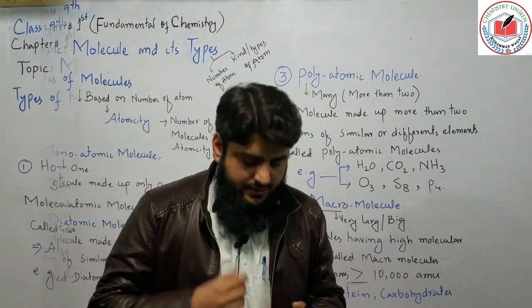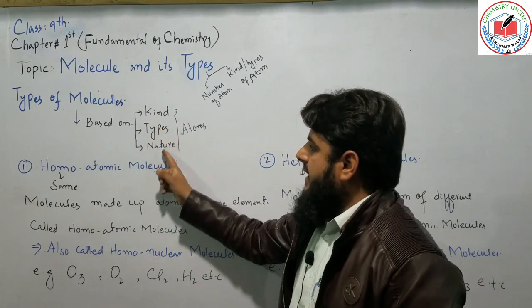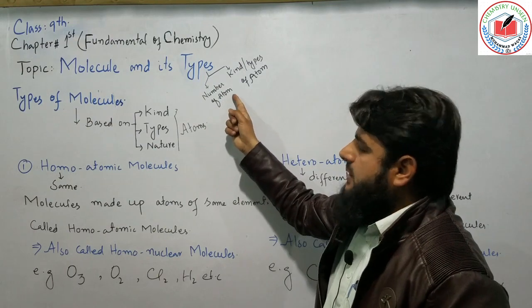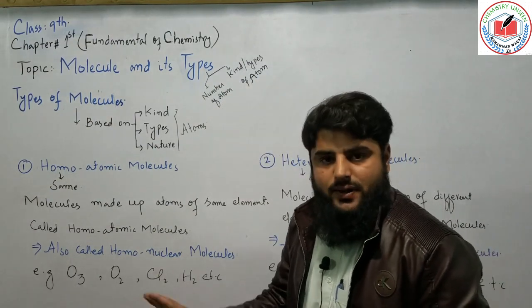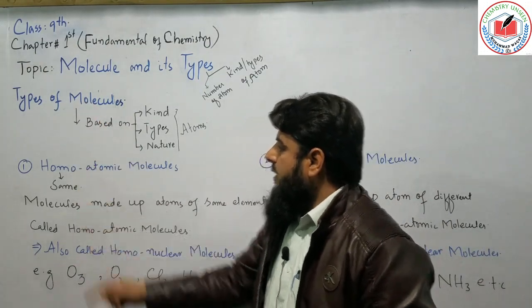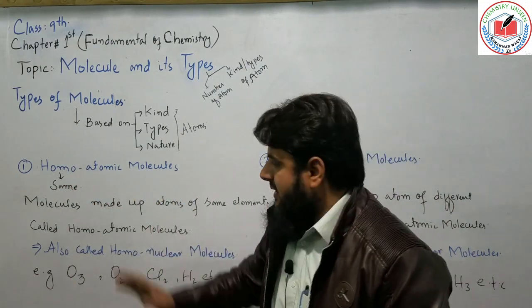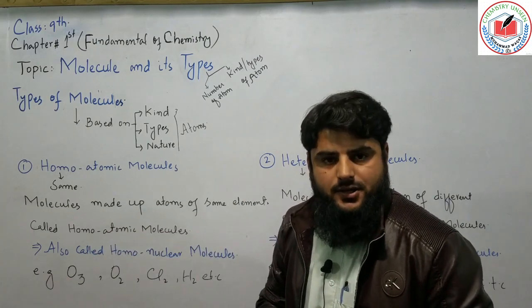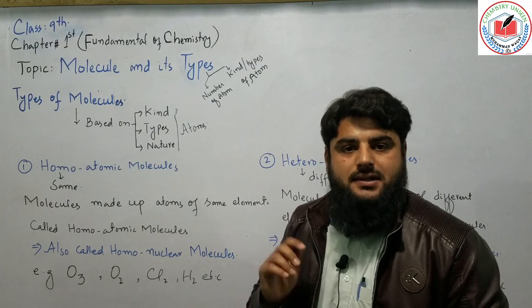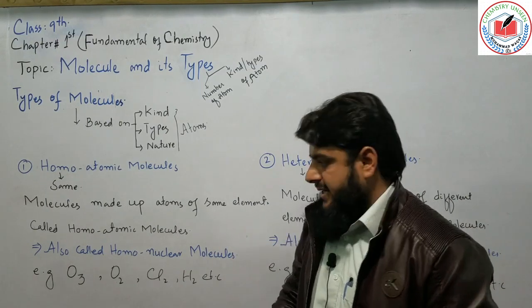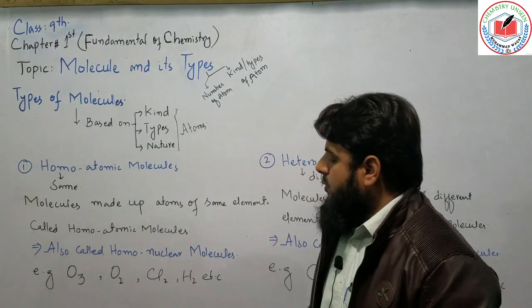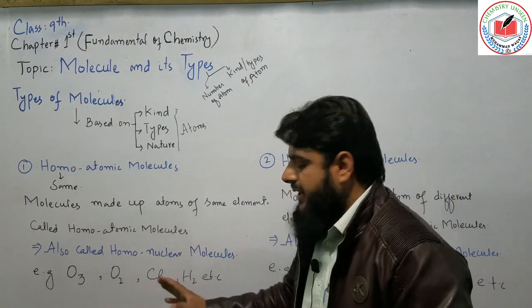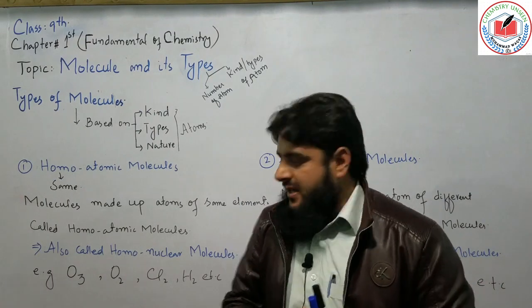Molecules can also be classified by the nature or type of atoms they contain. A molecule made up of atoms of the same element is called a homoatomic molecule. Examples include ozone (O3), oxygen (O2), chlorine (Cl2), and hydrogen (H2) — all formed from a single type of element.